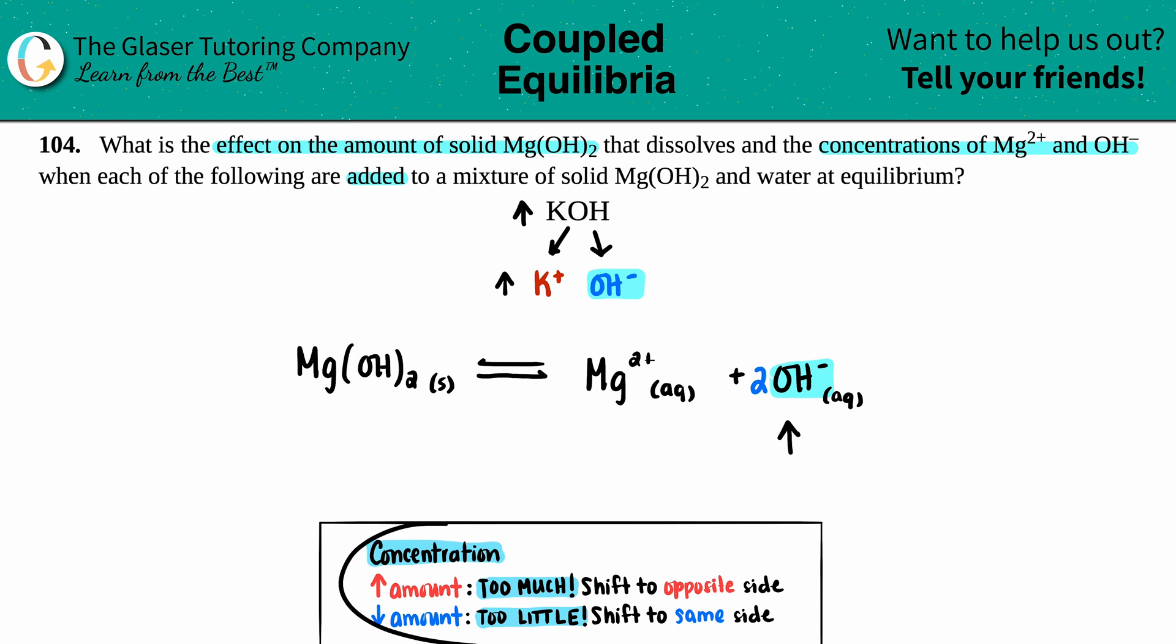Well, this goes back to Le Chatelier's. We're adding here. That means that we have too much. And when you have too much, you will always shift to the opposite side. So you're adding over here. You want to go in the opposite direction.